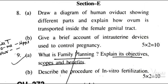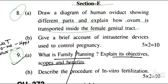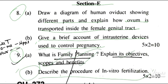The last section is Section E. Question 8: draw a diagram of the human ovary and explain how the ovum is transported inside the female genital tract. Question 9: give a brief account of intrauterine devices used to control pregnancy. The last question covers family planning — its objectives, scope, and benefits — and describe the procedure of in vitro fertilization.